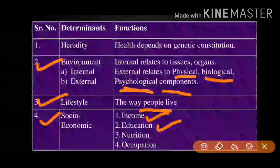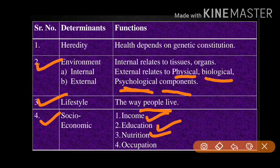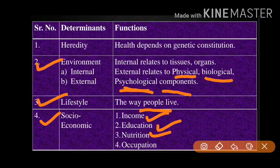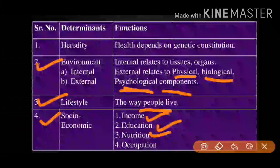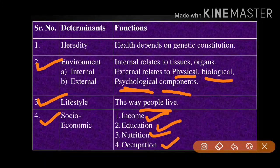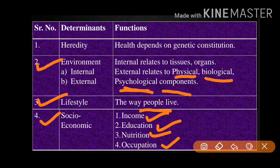Education is equally important for males, but in our country it is especially needed for females. Nutrition is another key factor — a person in a starving condition will not have good health, and nutrition is proportional to income. Every individual should have access to proper nutrition. Occupation is the fourth socioeconomic factor — people should have jobs in order to lead a healthy life.